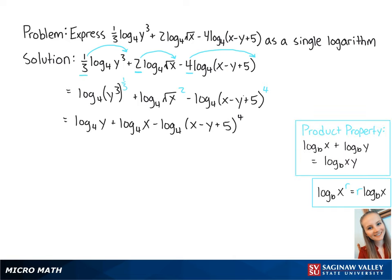Next, we're going to use the product property to combine these two logs. So this becomes the log base 4 of x times y, minus the log base 4 of x minus y plus 5 to the 4th power.